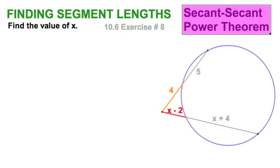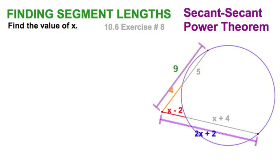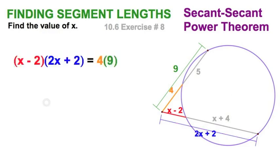And, here's another secant power theorem exercise, and we've got here a little bit more complicated than the last one. Remember, we need to use the exterior portion of the secant, multiplied by the entire secant. So, be sure to combine these expressions, 4 and 5 making 9, x minus 2, combined with x plus 4, 2x plus 2. So, now, we can set up the arithmetic. Red times blue equals orange times green. So,